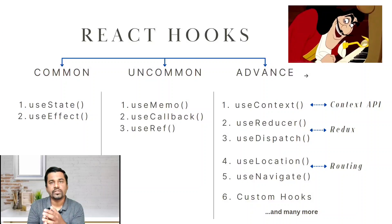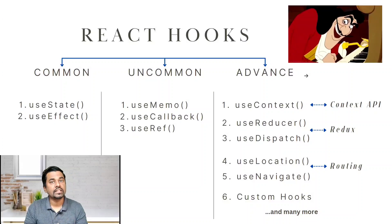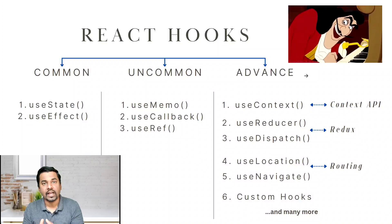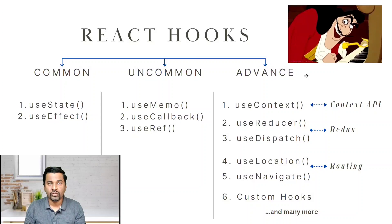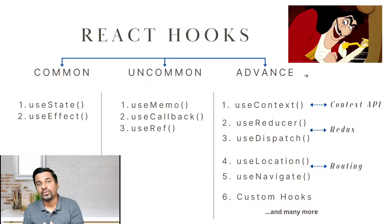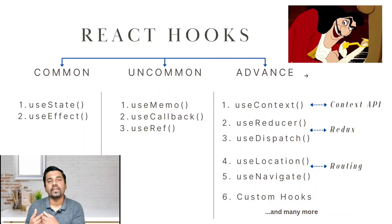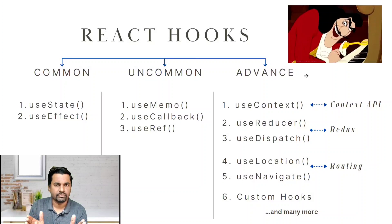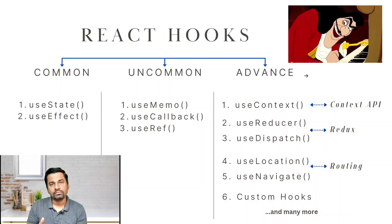The second category is uncommon hooks. These are hooks we generally do not use on a daily basis, but they are used to improve the performance of our application. We have useMemo and useCallback. We won't use them in small features, but when the feature grows big, we definitely have to use them to enhance our application. It's not compulsory to use these hooks, but they give us add-on benefits.